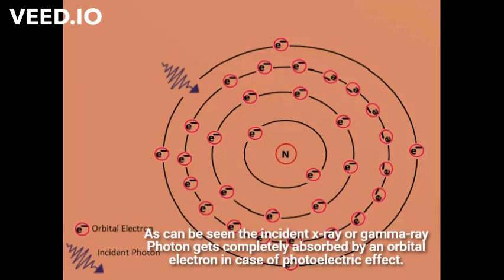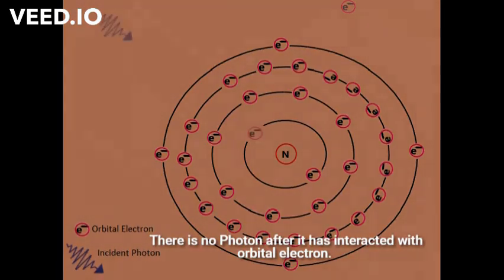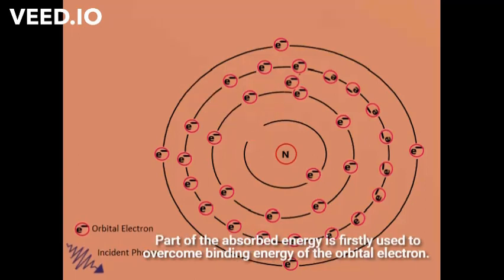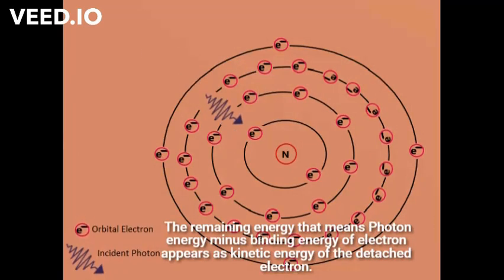As can be seen, the incident X-ray or gamma ray photon gets completely absorbed by an orbital electron in the case of the photoelectric effect. There is no photon after it has interacted with the orbital electron. Part of the absorbed energy is firstly used to overcome the binding energy of the orbital electron, so the orbital electron gets completely detached from the atom. The remaining energy — photon energy minus binding energy of the electron — appears as kinetic energy of the detached electron.